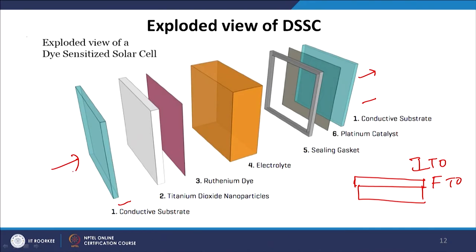Between the front electrode (photoanode) and the back electrode (cathode), we put the active layer. In dye-sensitized solar cells, the active layer consists of two components: a titanium dioxide layer and a dye molecule layer. Titanium dioxide is a wide band gap semiconductor with a twofold role: first, to absorb the dye molecule on its scaffold; second, to provide a percolating network for electron transport. The TiO2 must be as spongy as possible — called a mesoporous structure in literature — with large pores so that the dye molecule can enter the pores and electrons can percolate through.